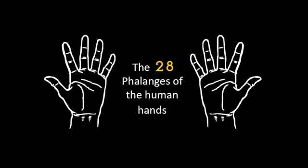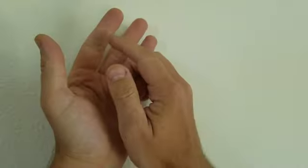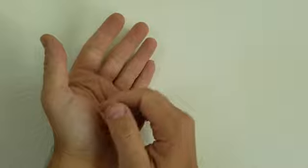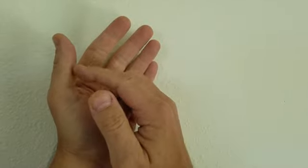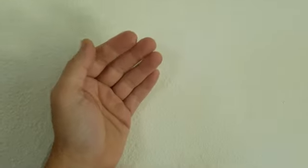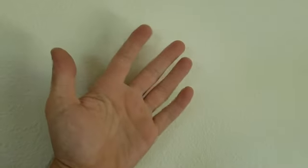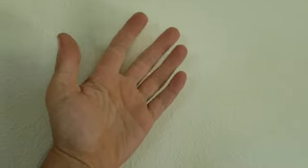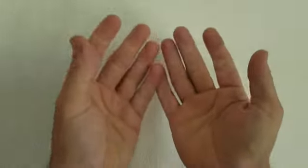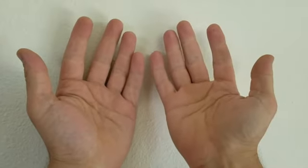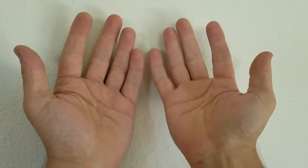Your fingers are naturally divided into 28 phalanges, or bone segments, with three on each finger and two on each thumb, giving 14 for the left hand and 14 for the right hand, coming together to be a total of 28.